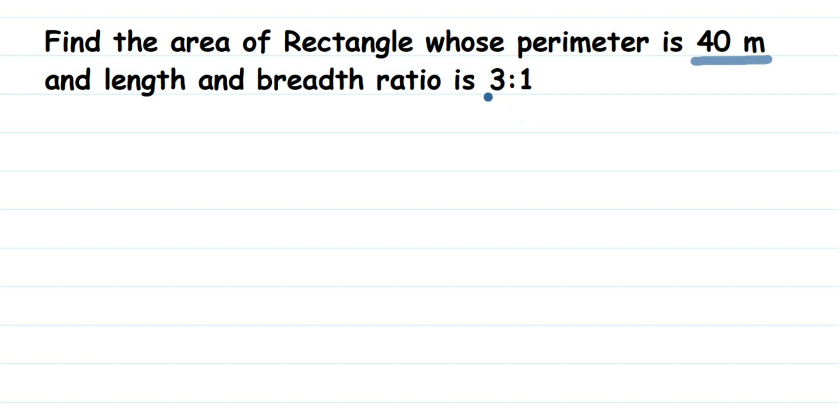What we have to find is the area of the rectangle. To find the area, we need to know length and breadth. But here they are given in ratio form. So first we're going to find the length and breadth, and then we're going to find the area.